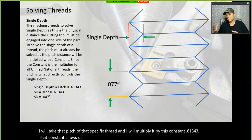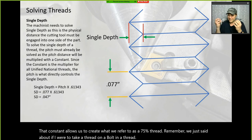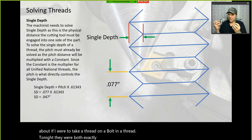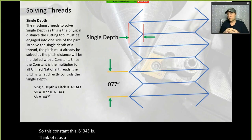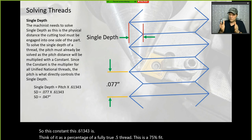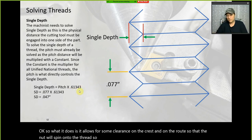If a bolt thread and a nut thread were both exactly 0.5 major diameter, they'd never engage. This constant, 0.61343, represents a 75% fit — it allows for some clearance on the crest and on the root so that the nut will spin onto the thread.